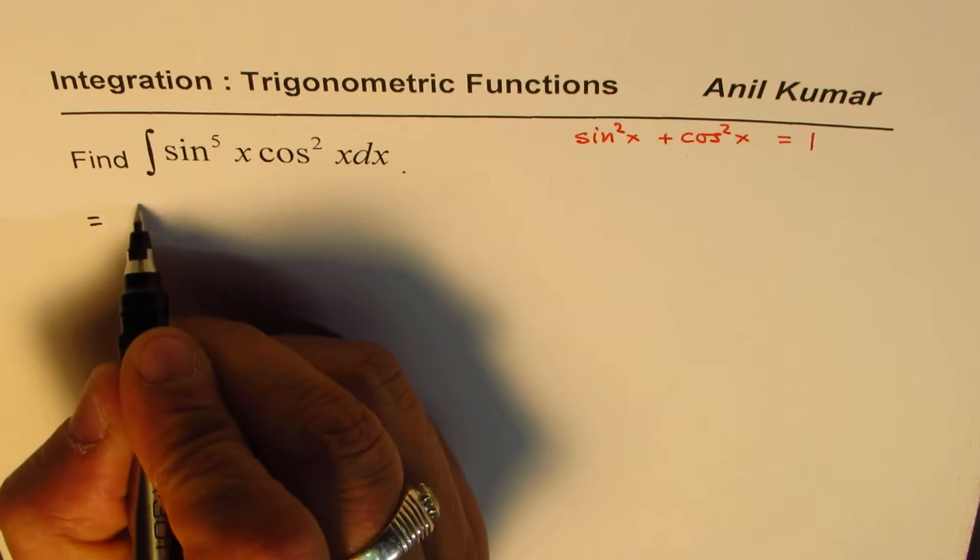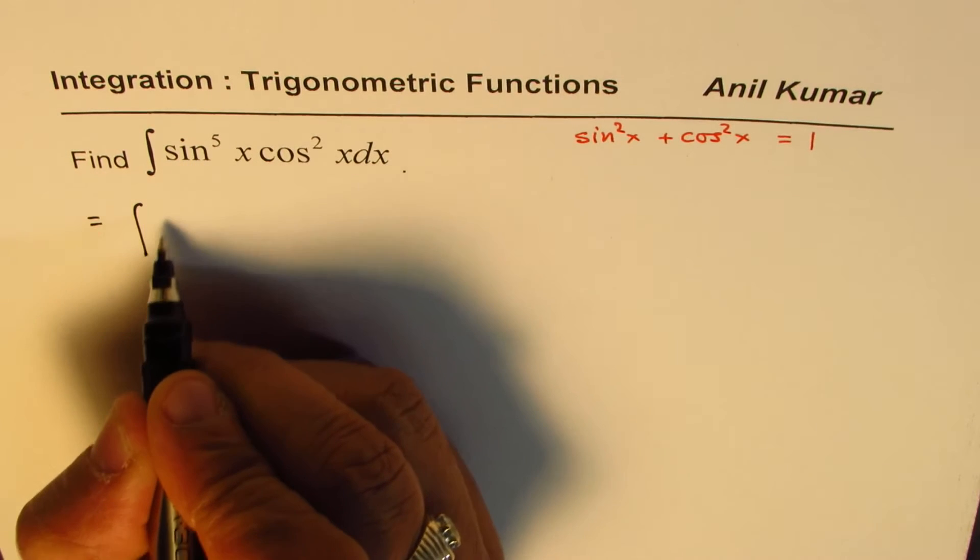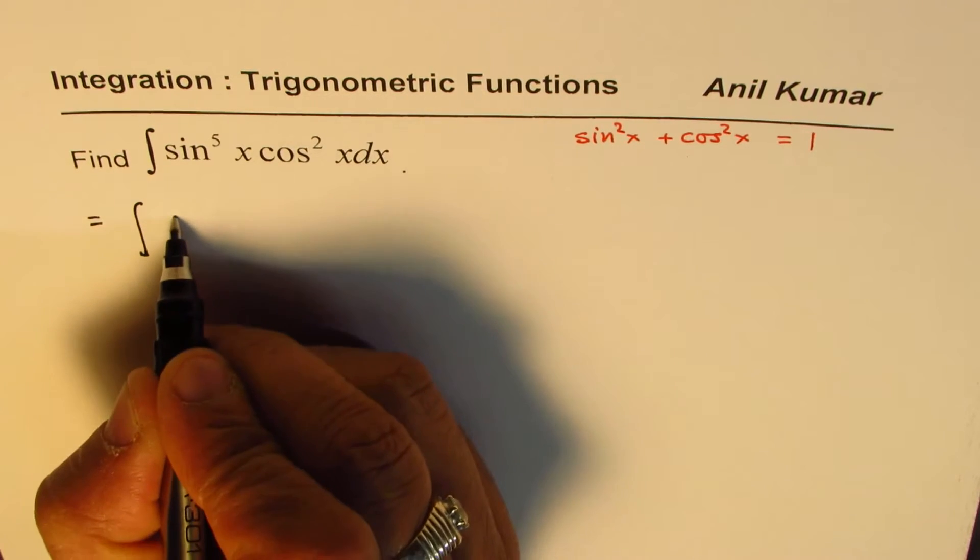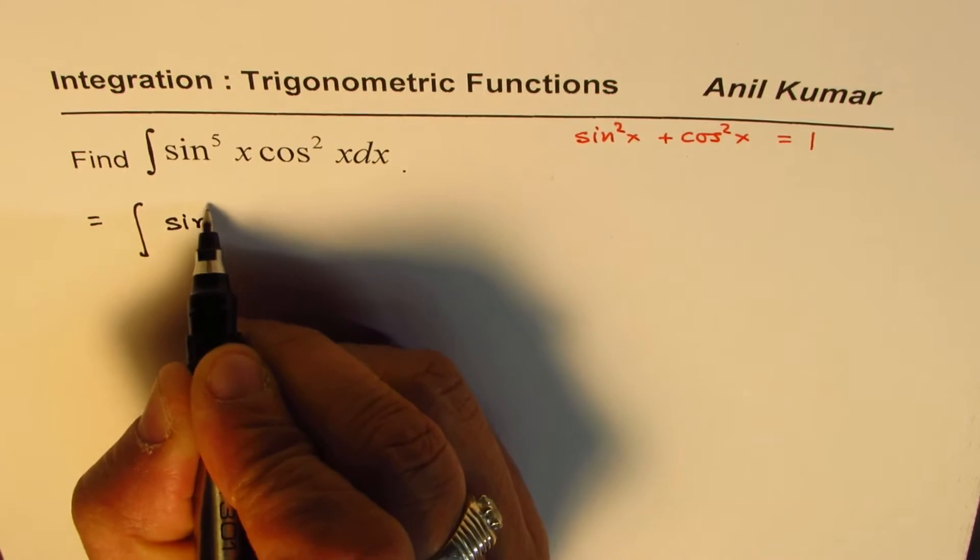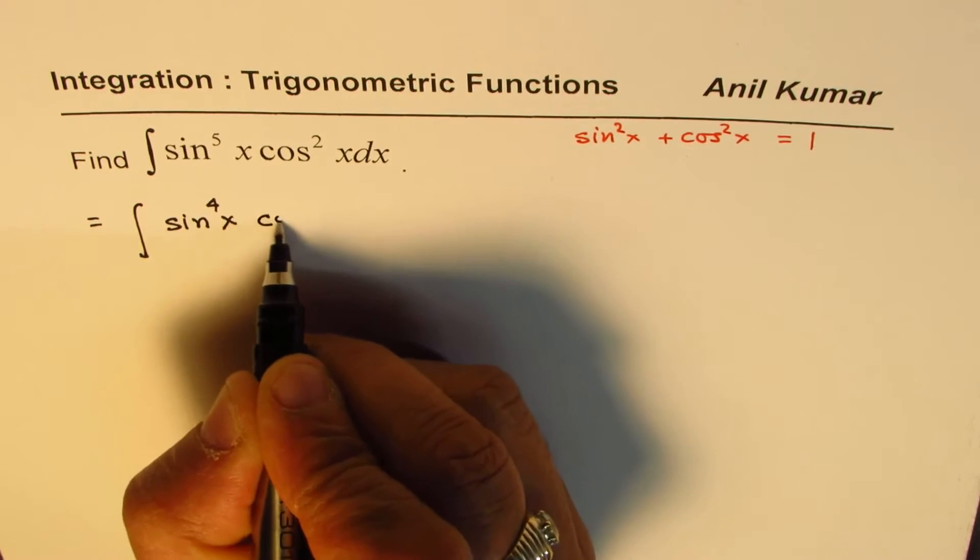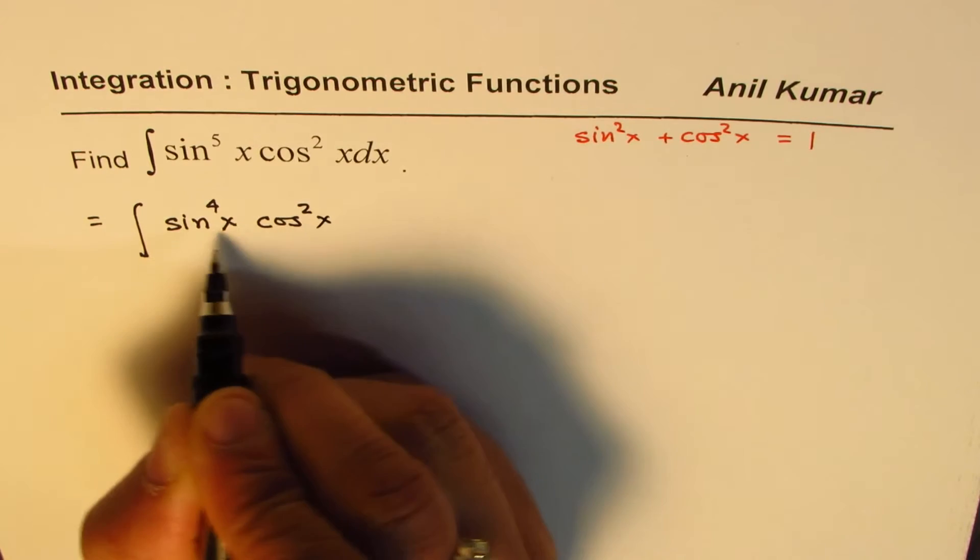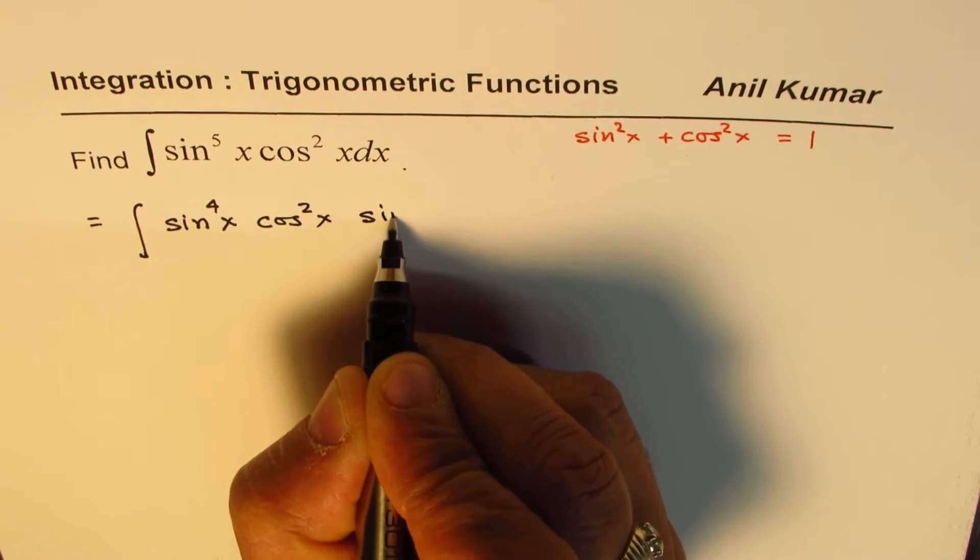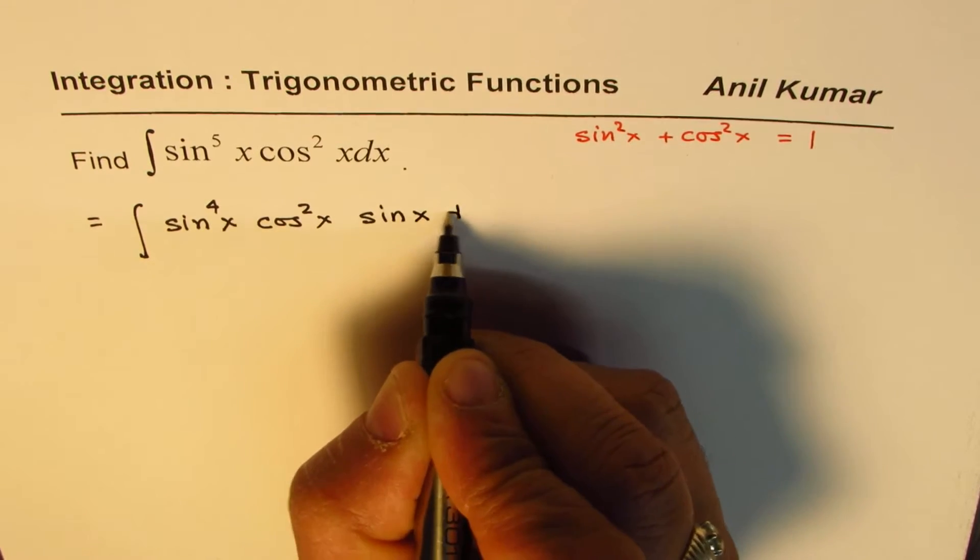So the strategy here is we'll write this sine to the power of 5 as sine to the power of 4x. And we'll keep one sine aside, so we'll write cos square x, and that is my fifth sine. Sine x dx.